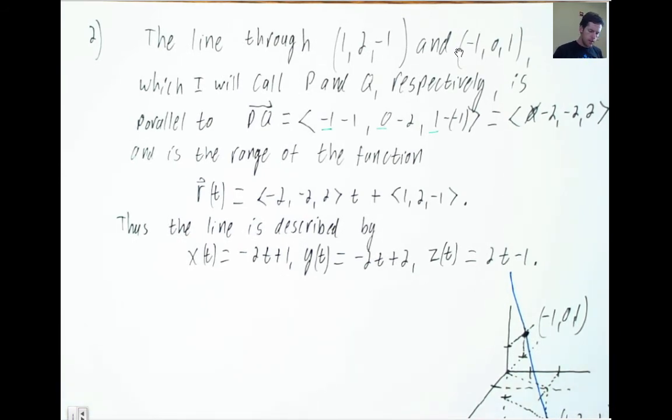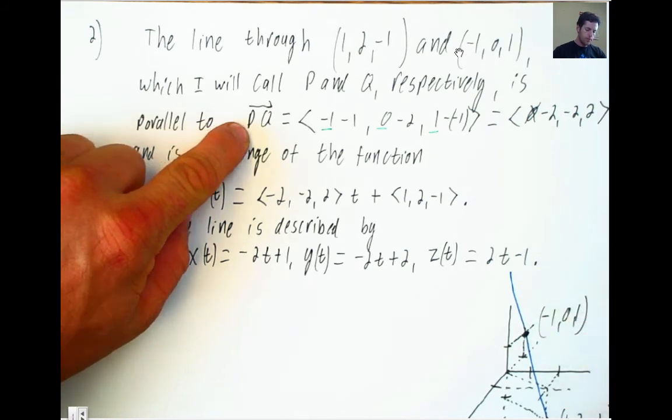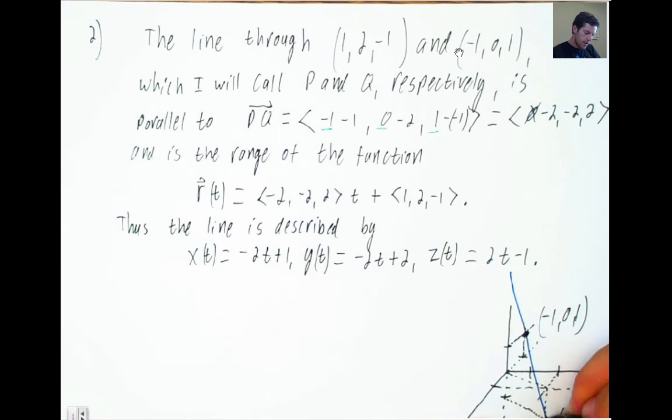And the idea here is that PQ, the direction P to Q, that's from (1, 2, -1) to (-1, 0, 1). That's this.